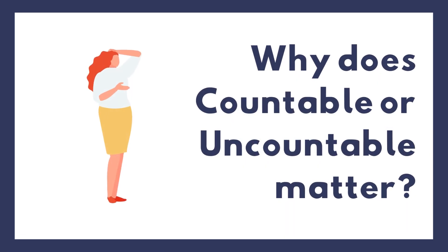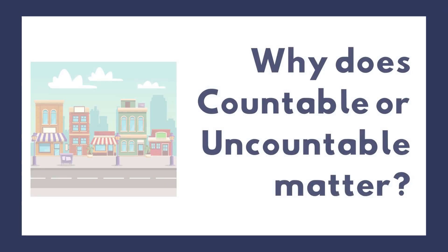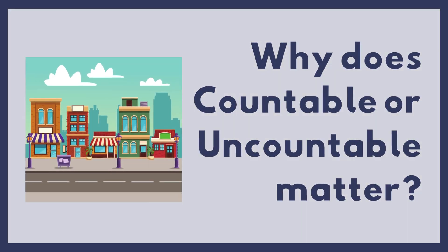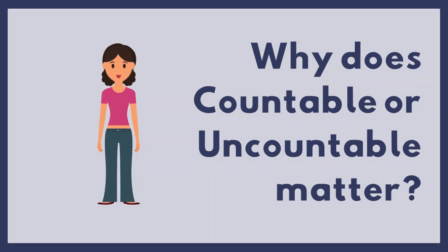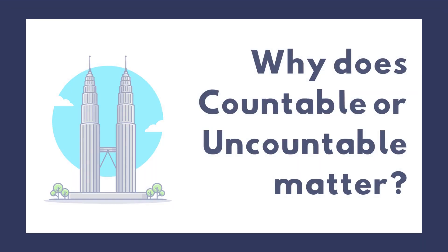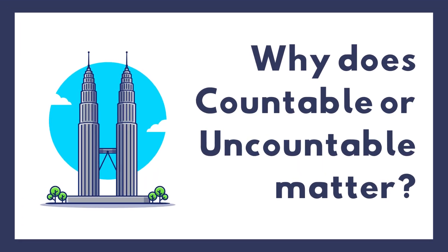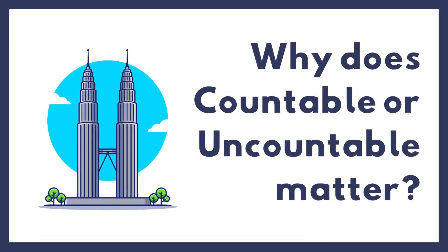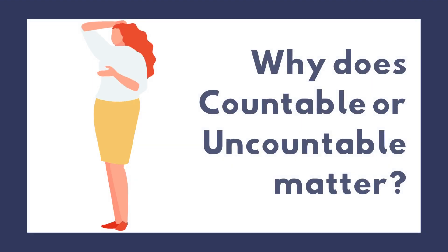We already know that nouns are a person, place, or thing. They can be common nouns like town, woman, or building. Or proper nouns like Washington, D.C., Taylor Swift, or the Petronas Towers.